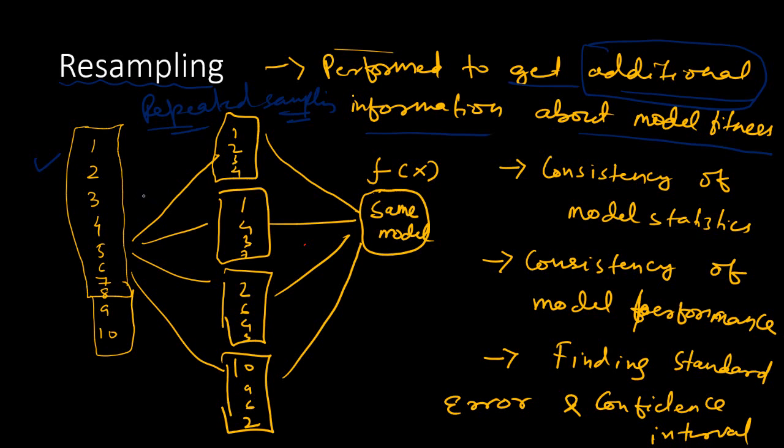So how does one do that? Well, you take out different samples from this main sample with repetition—that means the same data points could be in different samples—and you perform the regression, building the model on these smaller samples or smaller subsets of samples from the main sample, and you try to find out the consistency of the model statistics across these smaller samples.